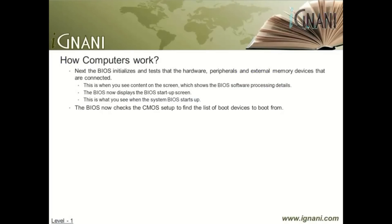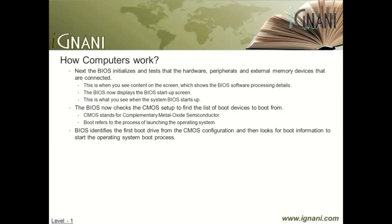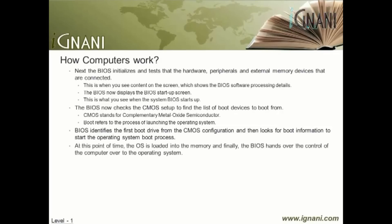The BIOS now checks the CMOS setup to find the list of boot devices to boot from. Boot refers to the process of launching the operating system. Based on the configuration, the BIOS identifies the first boot drive from the CMOS configuration and then looks for boot information to start the operating system boot process. If it finds what it is looking for, the BIOS starts the process of booting the operating system and the OS is loaded into memory. If the first configured device is not found, the BIOS will try the next device in the boot sequence and will continue until it finds a bootable device. If no boot device with boot sector information is found, the system displays an error message and stops the process.